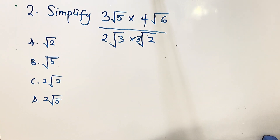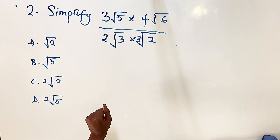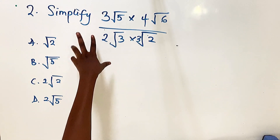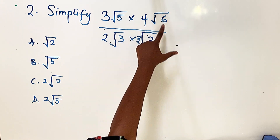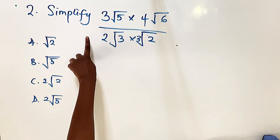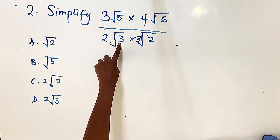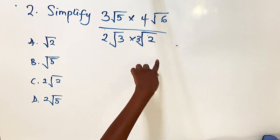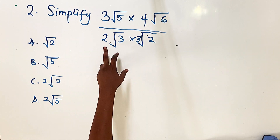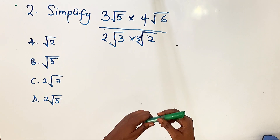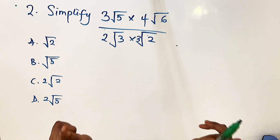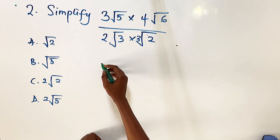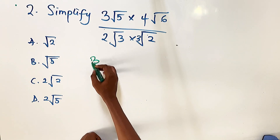Question number two: simplify 3 root 5 multiplied by 4 root 6, divided by 2 root 3 multiplied by 3 root 2. This might look complicated but it's actually very simple.